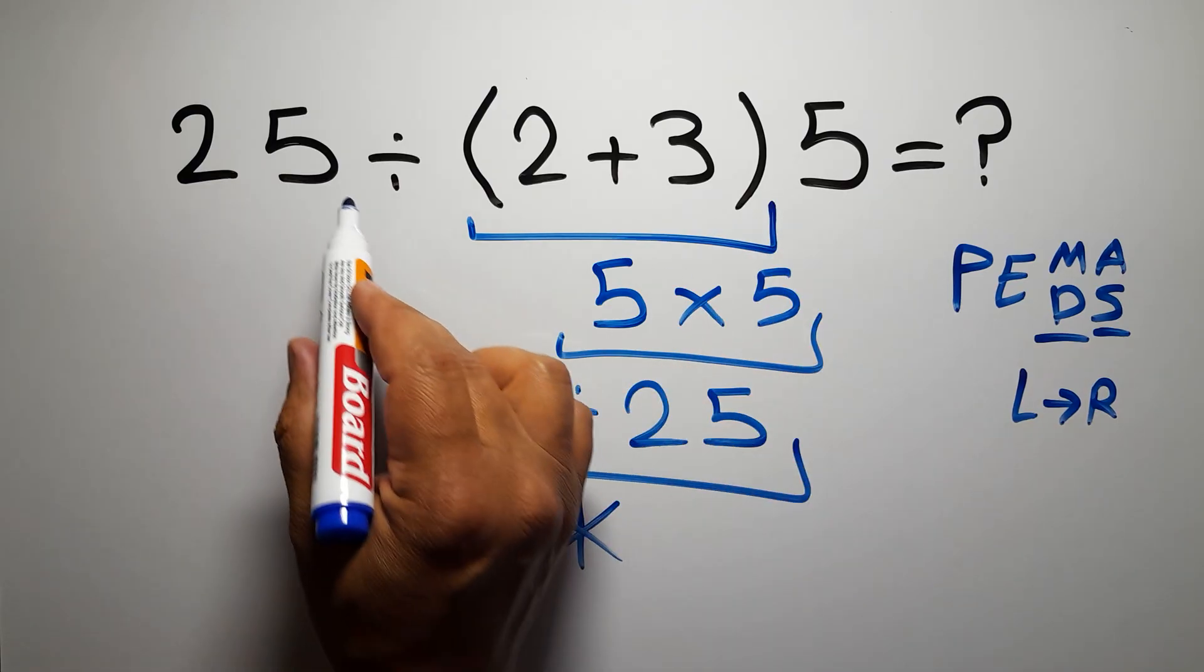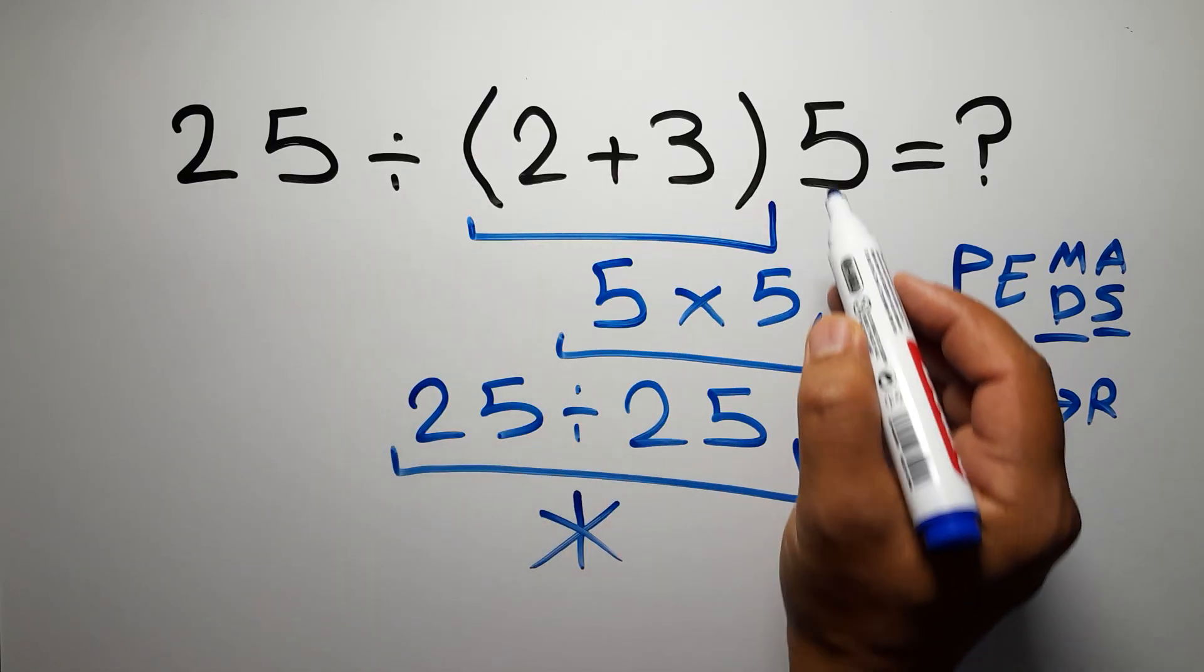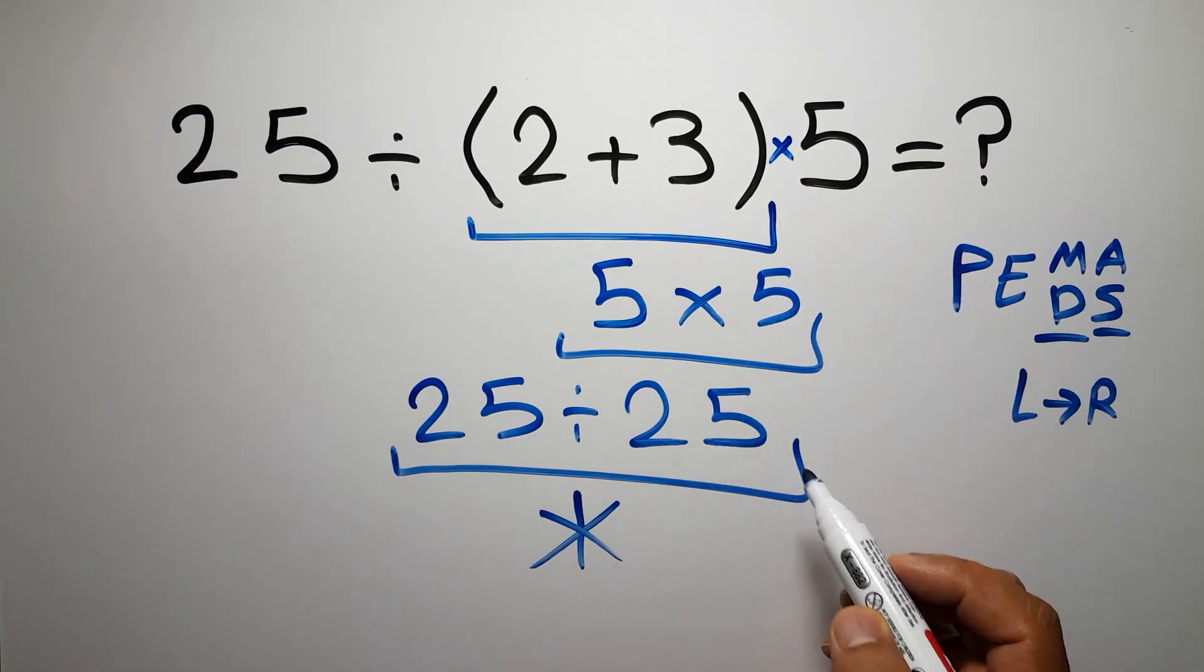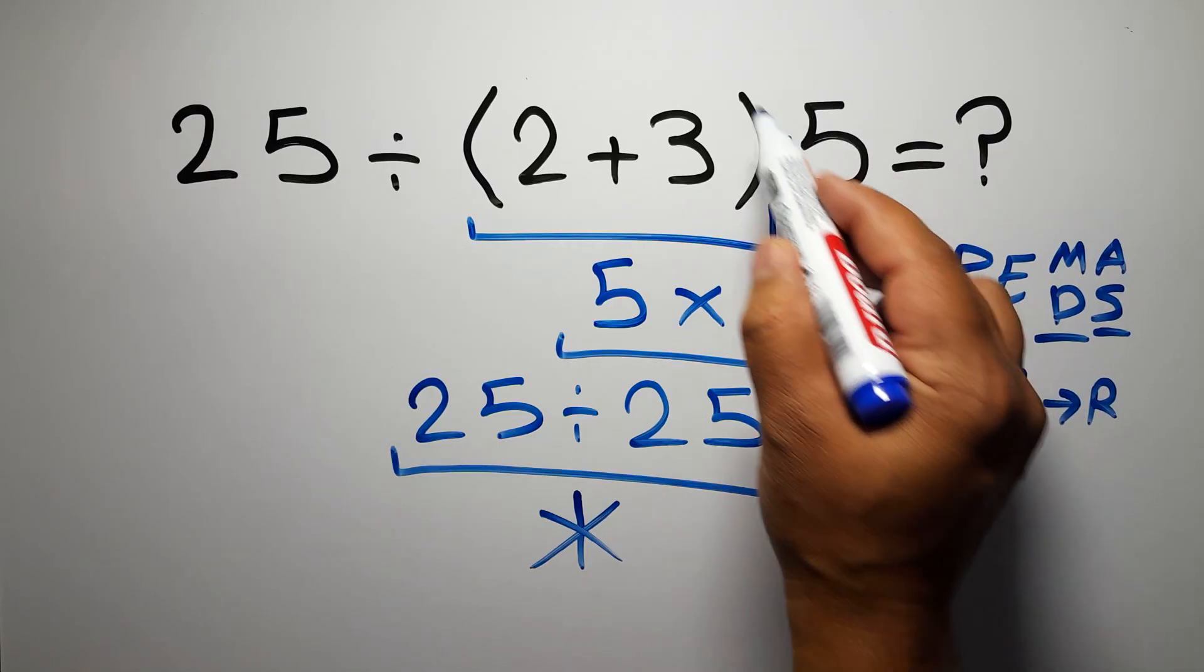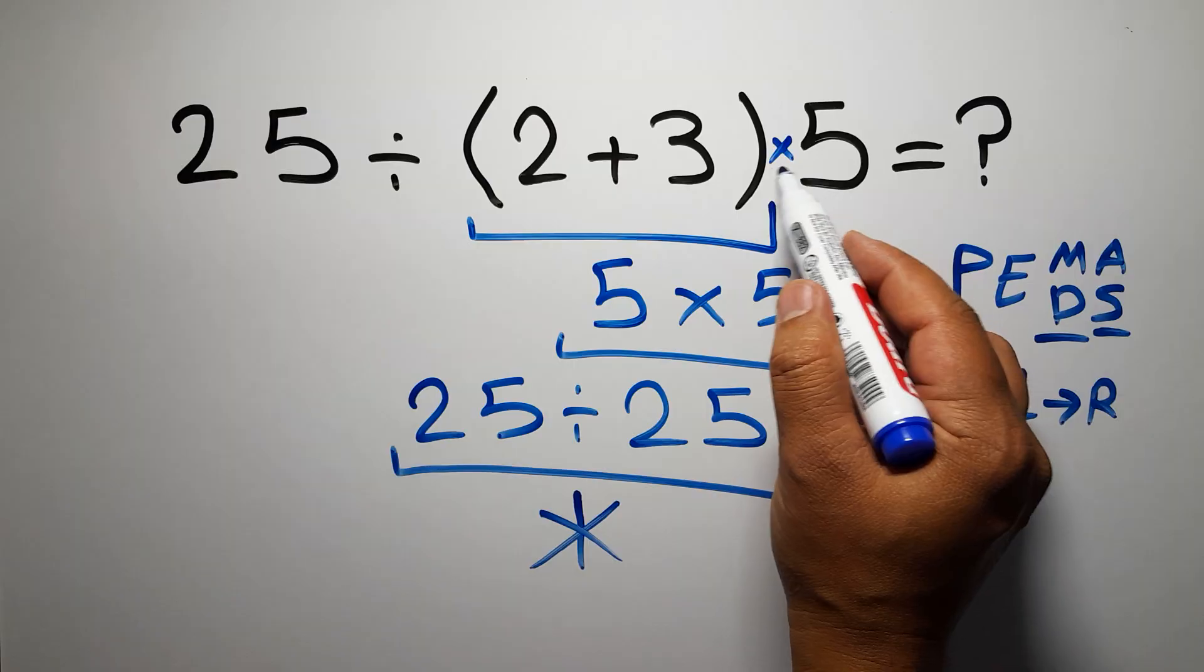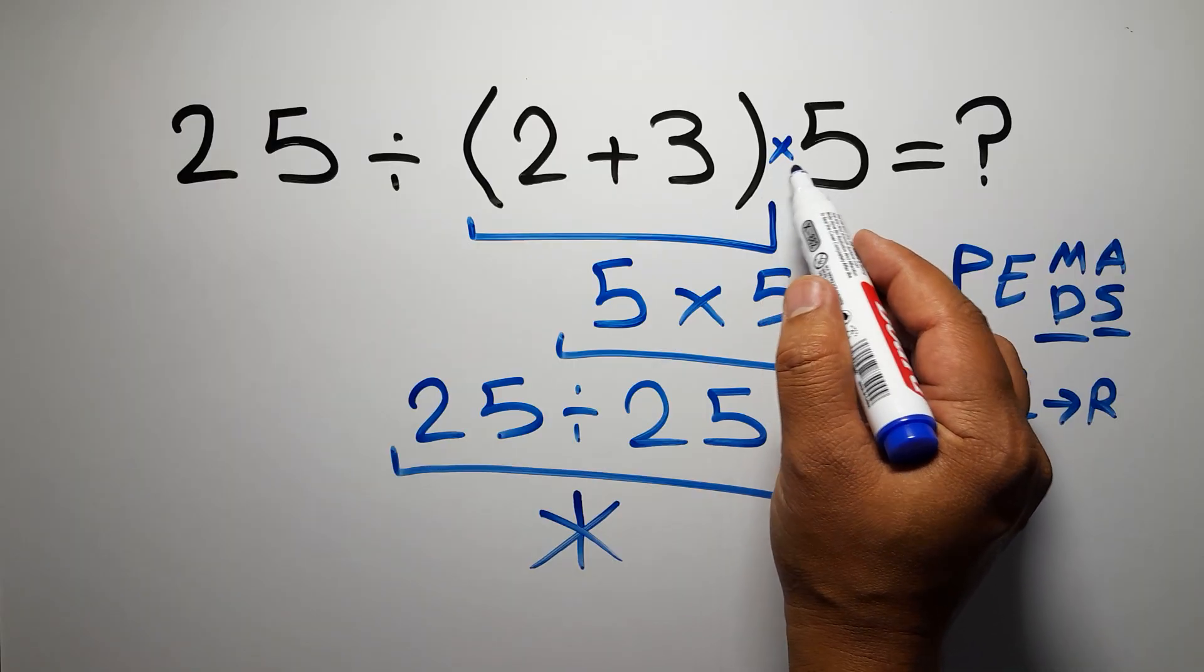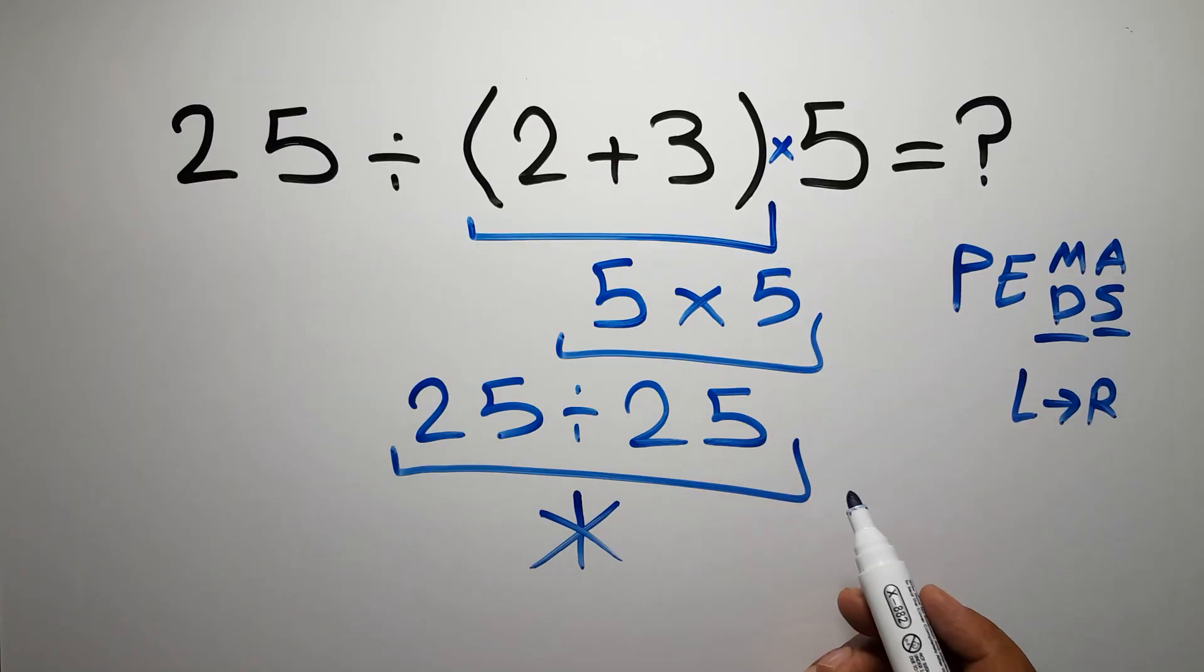In this expression, we have one division, one parenthesis, and one multiplication. In mathematics, when a number is placed next to parentheses, it means multiplication, and we usually don't write the multiplication sign for brevity.